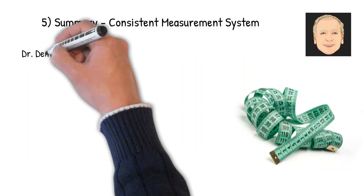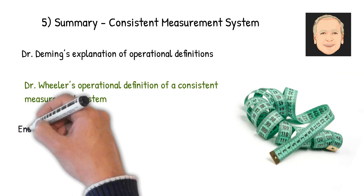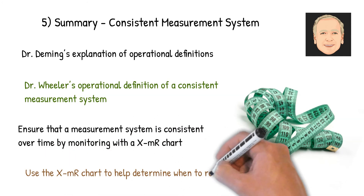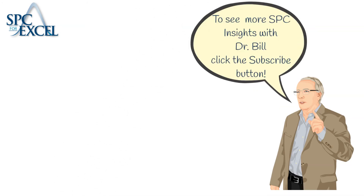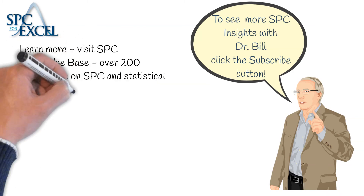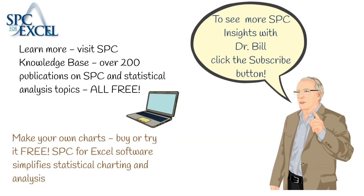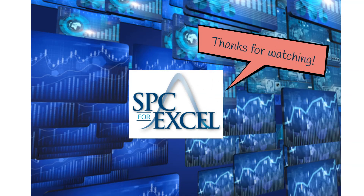Let's summarize what we've covered. We talked about Dr. Deming's explanation of operational definitions and showed how Dr. Wheeler applied it to a measurement system. To ensure that a measurement system is consistent, you monitor it over time with an XMR chart and use that chart to help determine when to recalibrate. To see more SPC Insights with Dr. Bill, subscribe and visit our website — we have over 200 knowledge base articles on SPC and statistical analysis topics. You can also make your own charts by trying our software for free at www.spcforexcel.com. Thanks for watching!